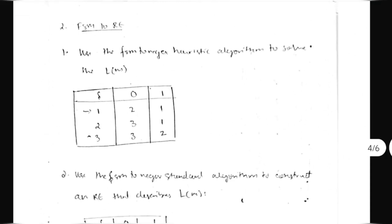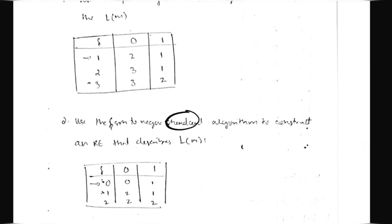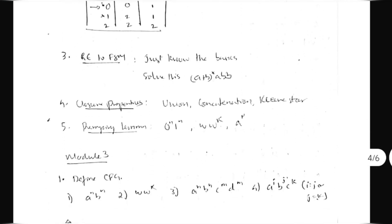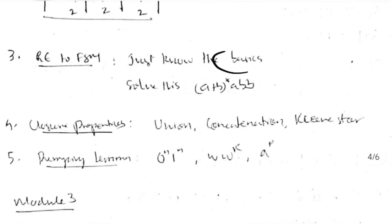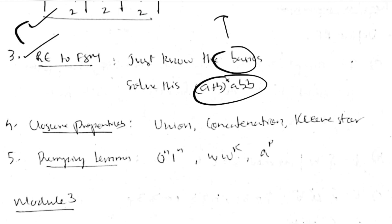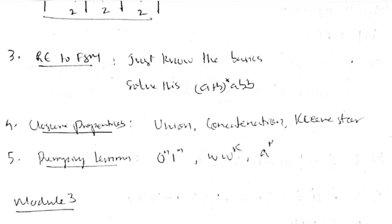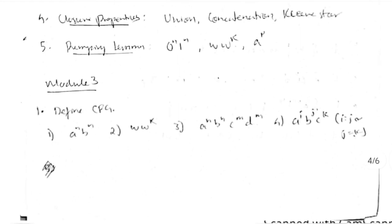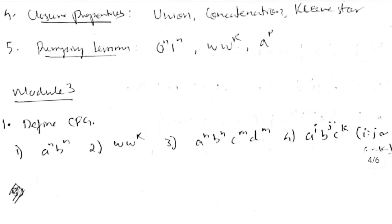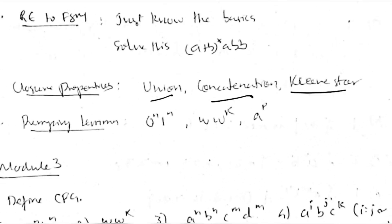For FSM-to-RE questions, they'll specify whether to use the heuristic or standard method, so read the question carefully and know both. For RE-to-FSM, just know the basics — it's very simple. If choosing between FSM-to-RE and RE-to-FSM as an 'or,' I recommend focusing on FSM-to-RE. For closure properties, the most repeated ones are union, concatenation, Kleene star, intersection, and reversal.